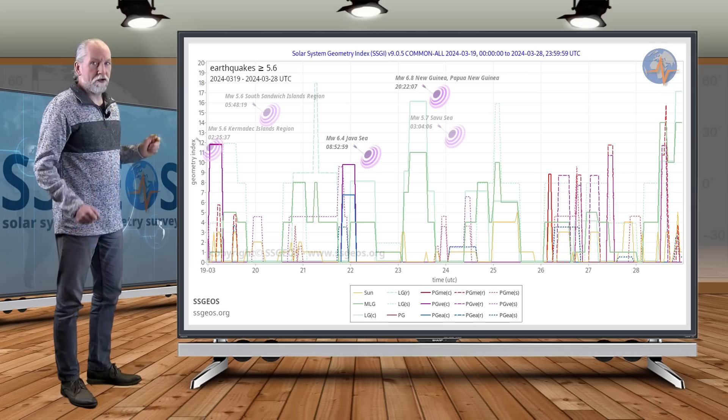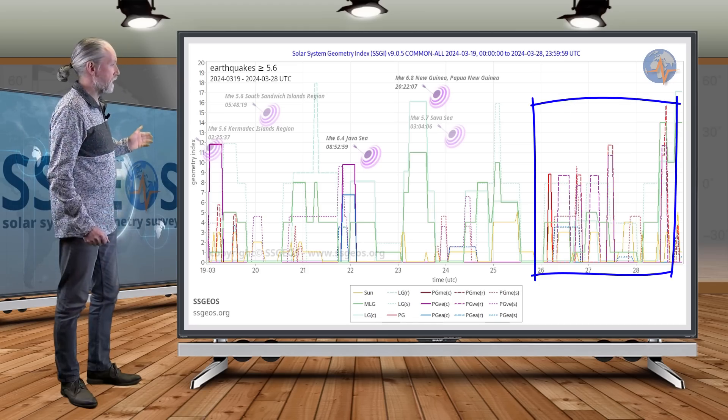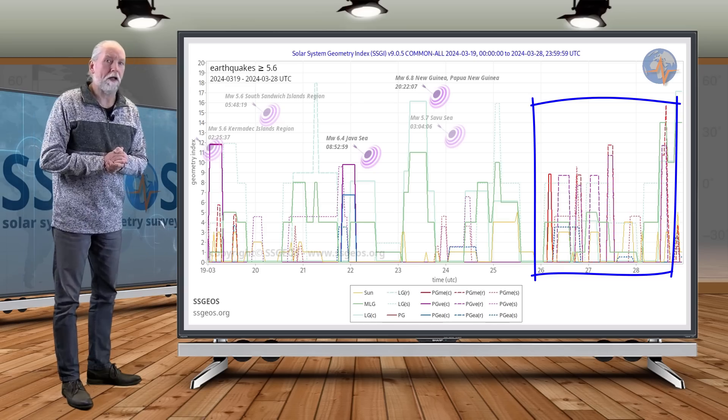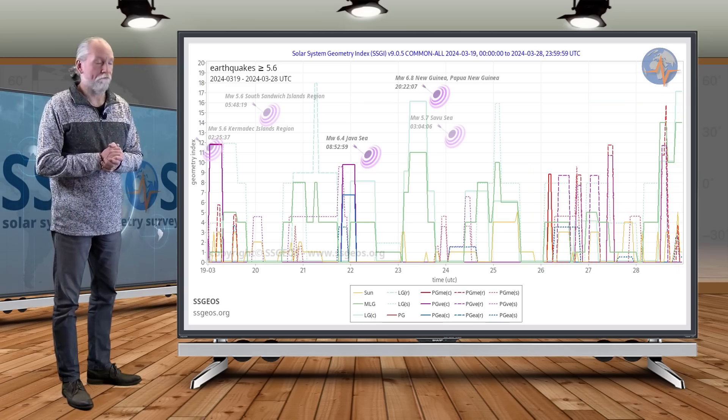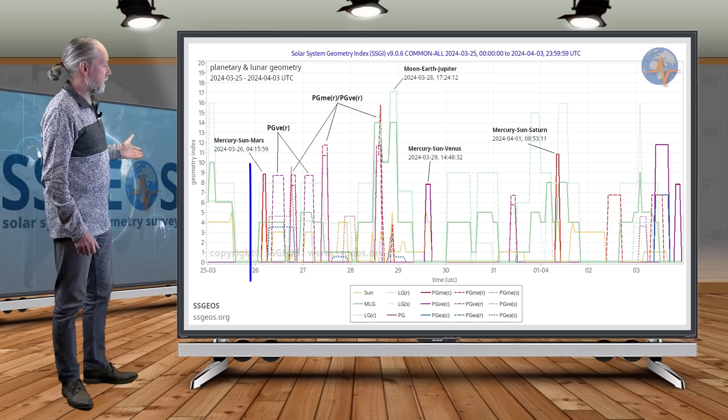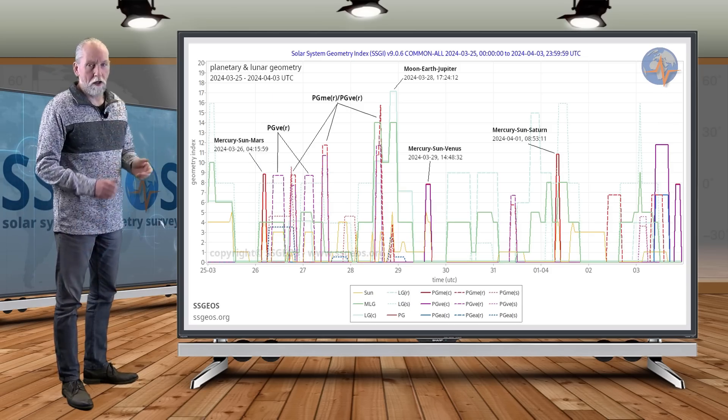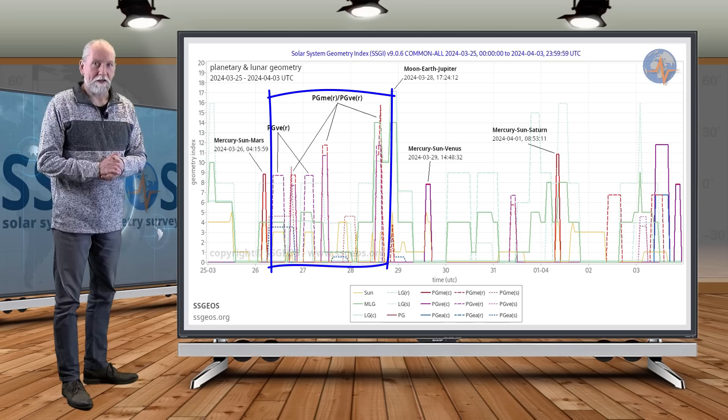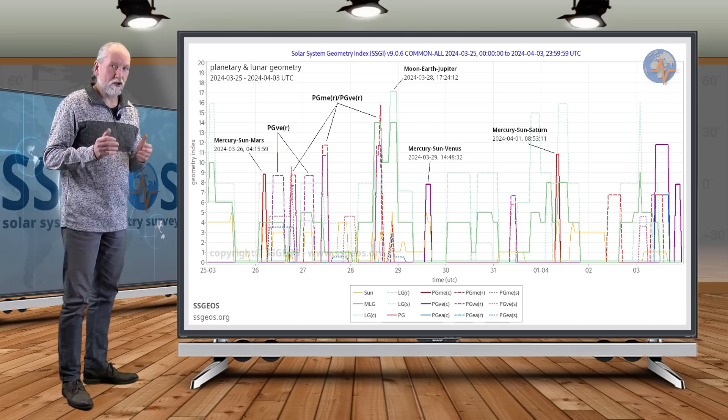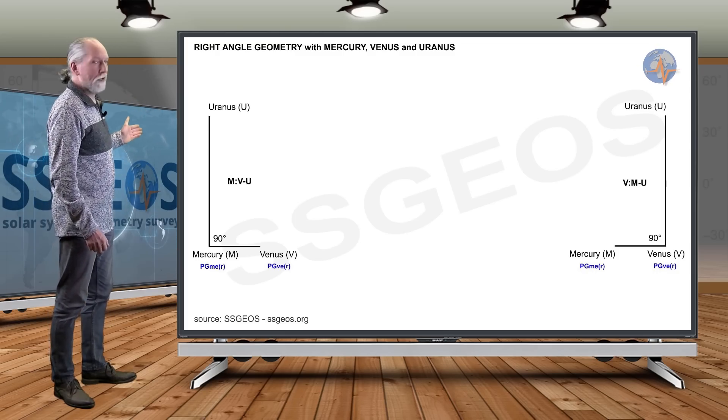I already mentioned the geometry that we're going to have from the 26th to the 28th. This is a grouping of right-angle geometry involving Mercury and Venus, and that is critical. So let's have a look. Early on the 26th, it starts with a conjunction of Mercury, Sun, and Mars, and then we have this grouping of right-angle geometry, and that deserves a bit of an explanation. I made some illustrations to clarify this geometry.